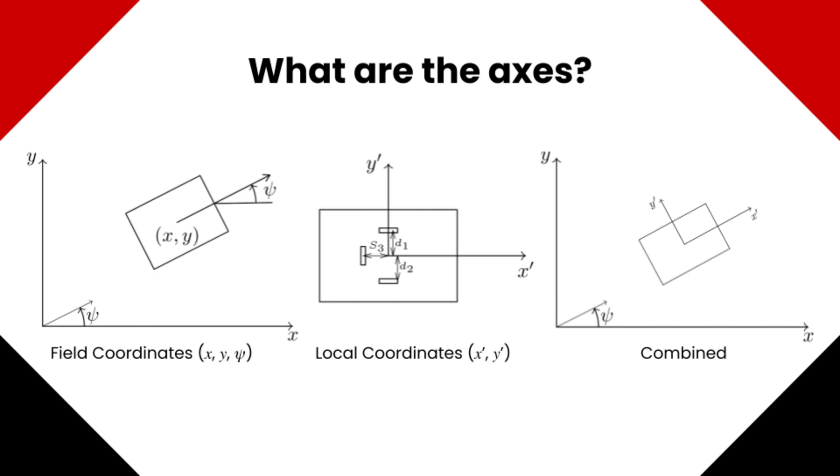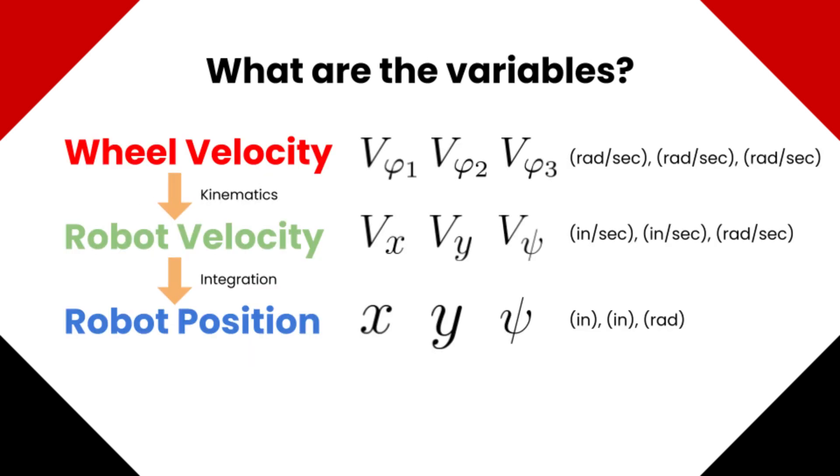We also need to define the variables we know and the variables we are trying to find. The rotational velocity of the three wheels are v_psi_1, 2, and 3, which is what we use to find the robot velocity, and then the robot position x, y, and psi.